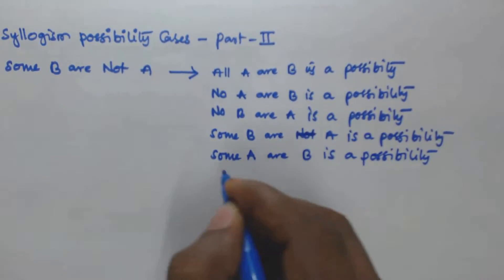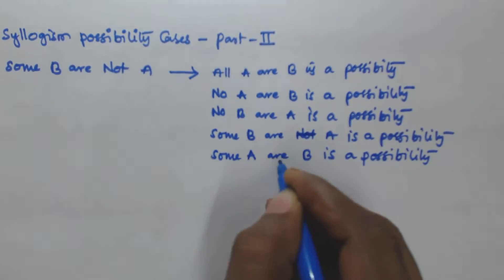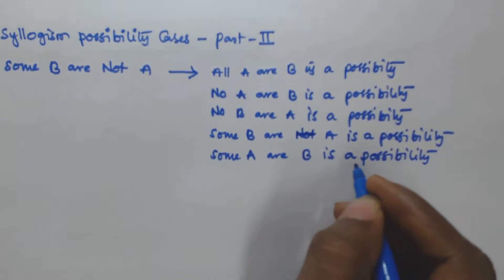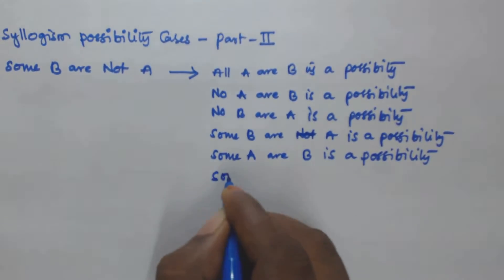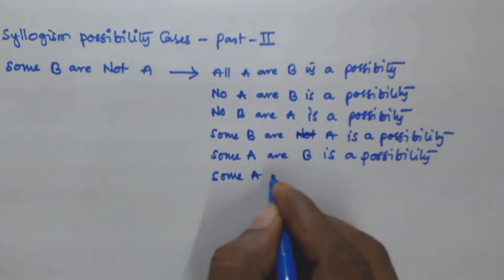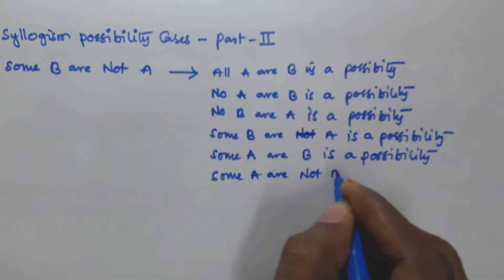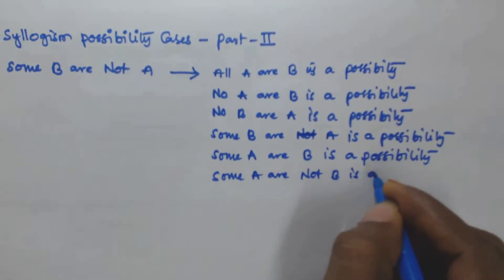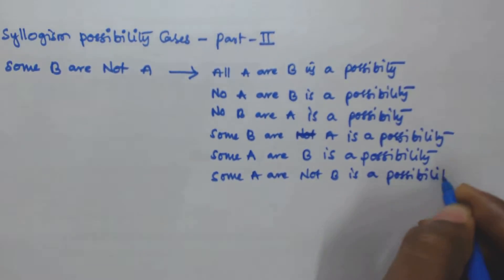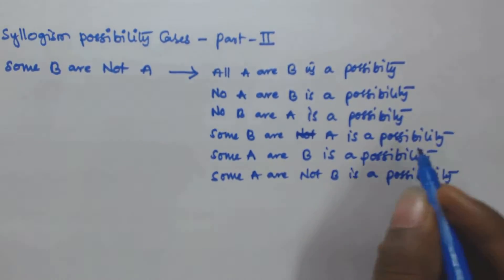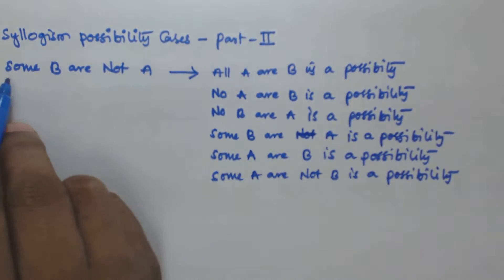If 'some a r b', then 'some a r not b' is also a possibility. So these are the six possibility cases we can derive from the statement 'some b r not a'.